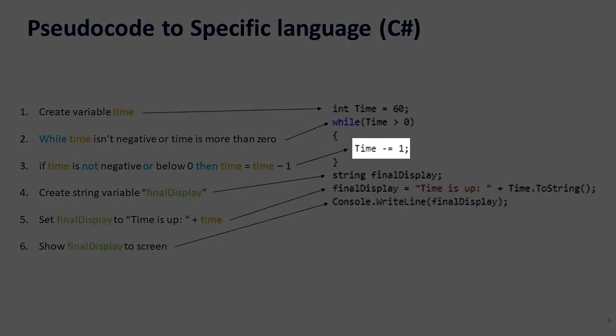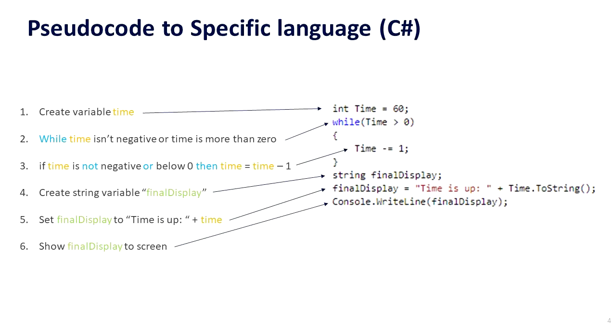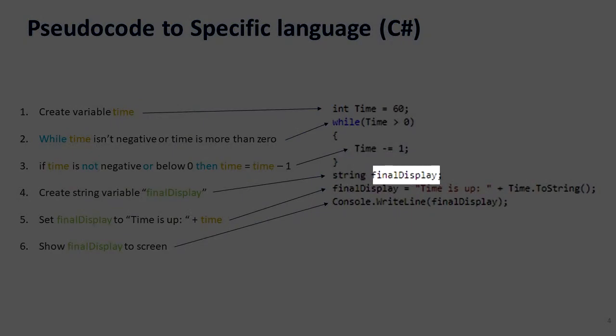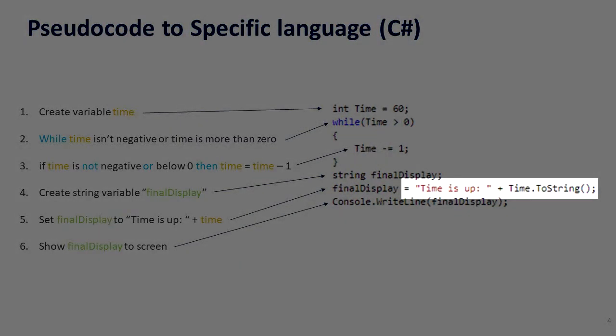Once that's finished, we create a variable that's a string called final display. We assign it to "time is up" and the time to string since an integer is not a string. Then we finally display it back to the screen.